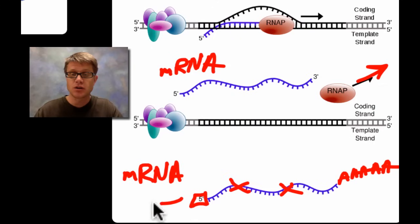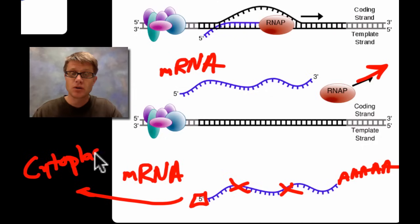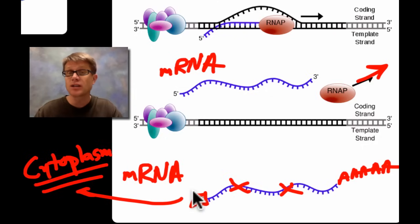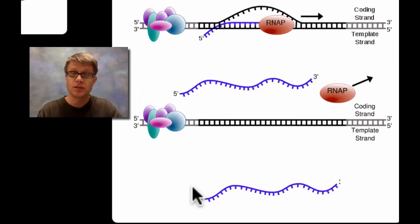But basically what we have when we're done with transcription is some messenger RNA. Where does that messenger RNA go? It's going to go outside of the nucleus and into the cytoplasm. That's where we're actually going to take that message and we're going to make a protein out of it. We're going to build that out of amino acids.